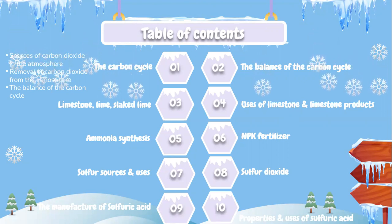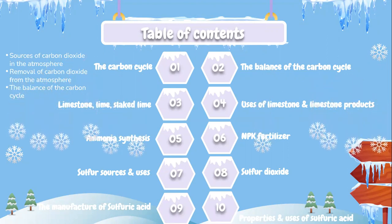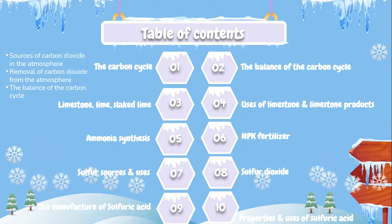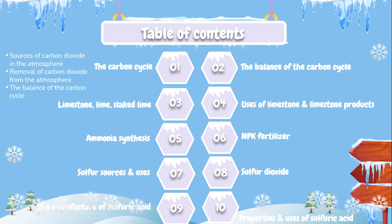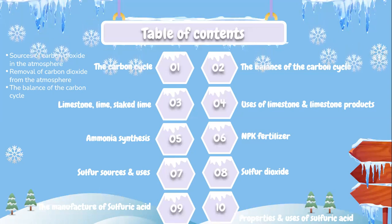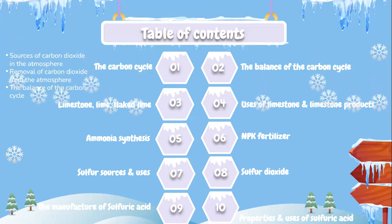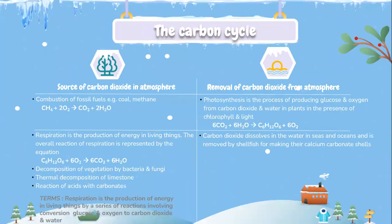Our study outline comprises of the carbon cycle, which describes sources of carbon dioxide in the atmosphere, removal of carbon dioxide from the atmosphere, the balance of the carbon cycle, limestone, lime, slaked lime, uses of limestone and limestone products, ammonia synthesis, NPK fertilizer, sulfur sources and uses, sulfur dioxide, the manufacture of sulfuric acid, and finally properties and uses of sulfuric acid.